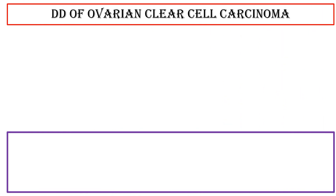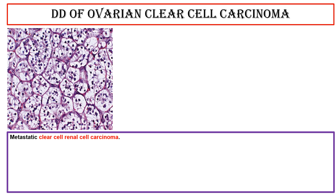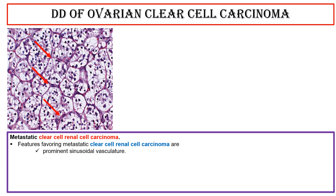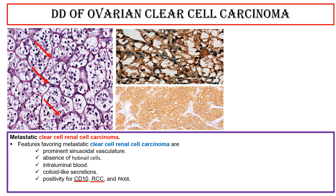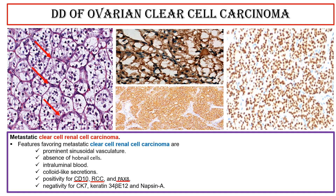Differential diagnosis — metastatic clear cell renal cell carcinoma: features favoring metastatic clear cell RCC include prominent sinusoidal vasculature, absence of hobnail cells, intraluminal blood, colloid-like secretions, positivity for CD10, RCC antigen, and PAX8, and negativity for cytokeratin 7, keratin 34βE12, and napsin A.